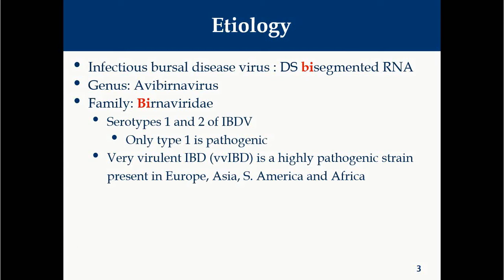Serotype 2 does not protect against serotype 1 infections, so there is no cross-immunity. Most importantly, a very virulent vvIBD strain is present in Europe, Asia, South America, and Africa.